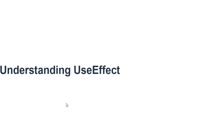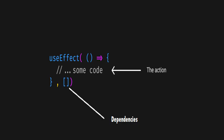The UseEffect hook in React is a built-in hook that lets you sync your component with external systems or to perform some setup or cleanup actions when the component renders or unmounts. The UseEffect hook accepts two arguments: the first is a function that contains your logic, and the second is a dependency array that determines when to rerun the effect.